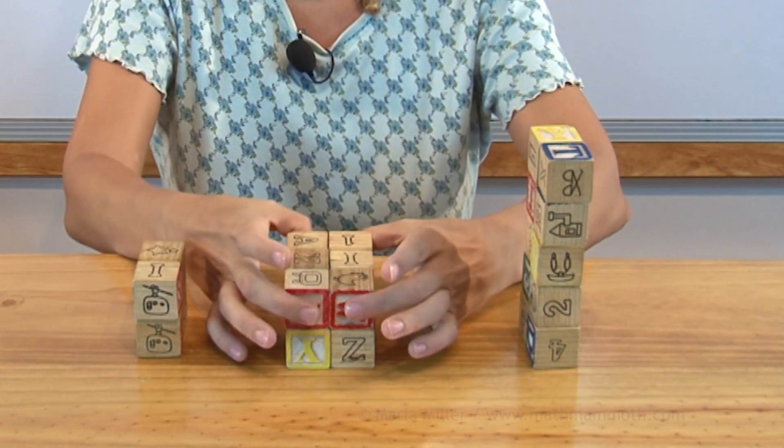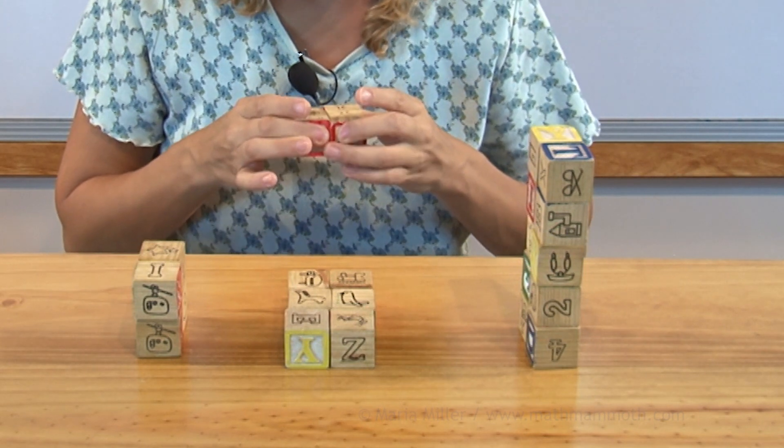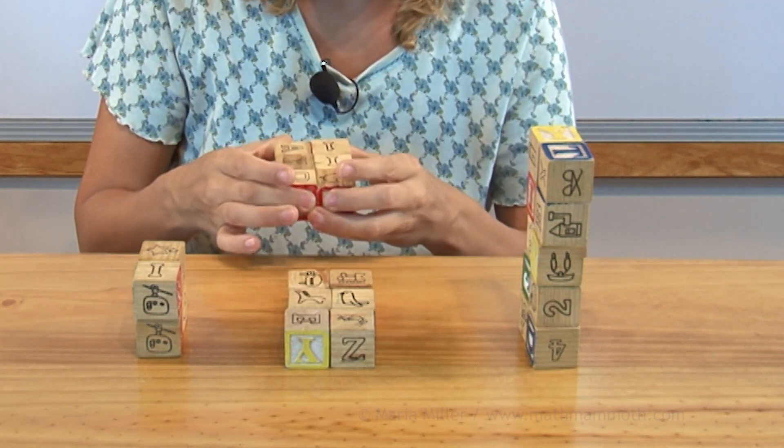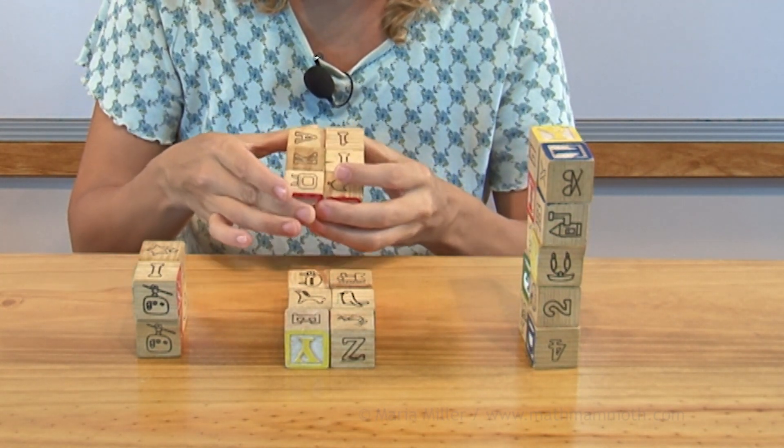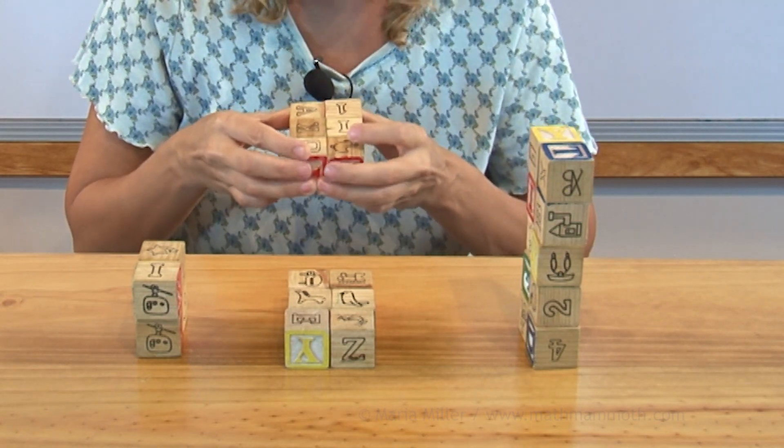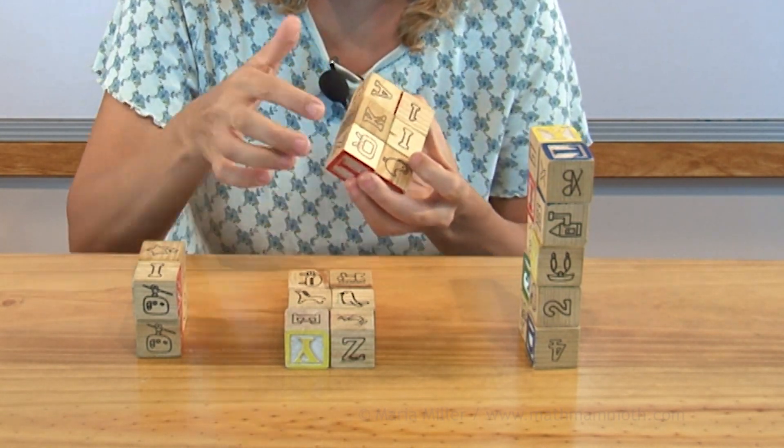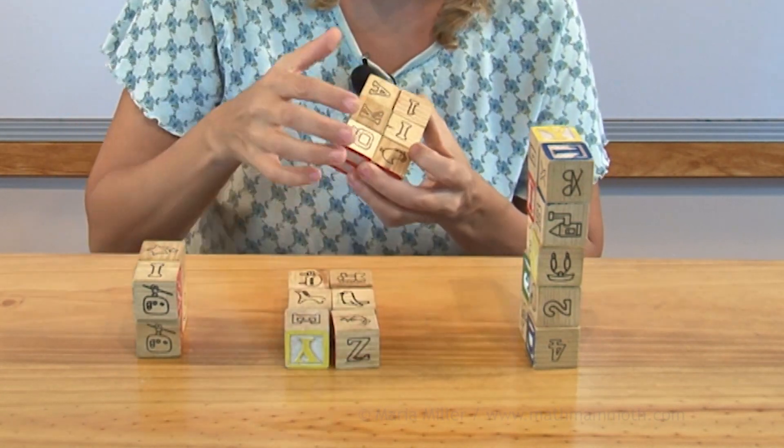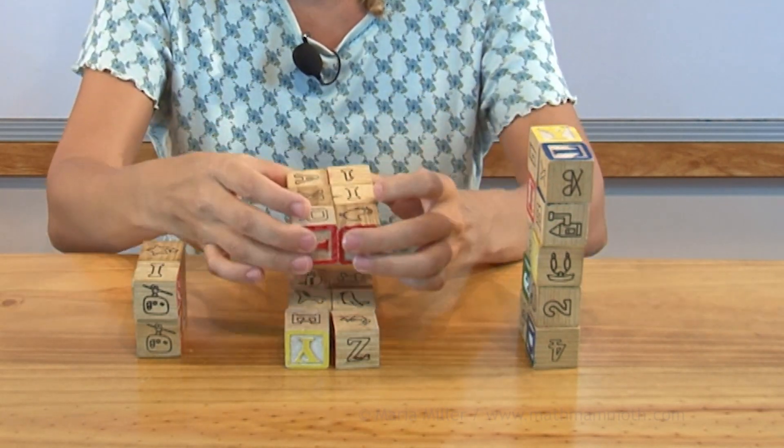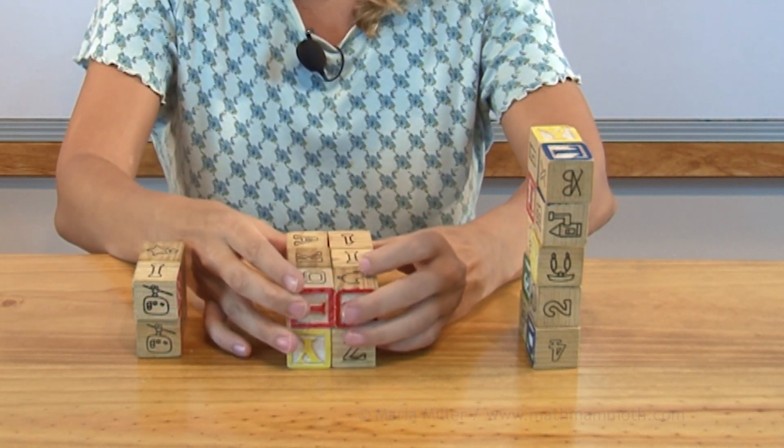Over here, you can look at the bottom, and even the bottom you can find out by multiplying. You can find how many blocks there are by multiplying two times three, right? And that is your width and your depth. Width times depth, two times three is six. And then another layer of six, six times two is twelve.